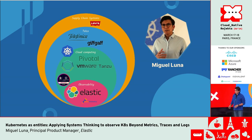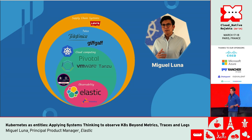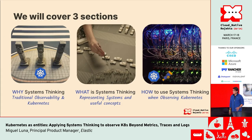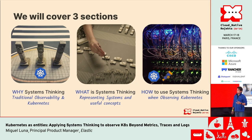A little bit about myself. I'm Colombian, I've been living in London for 20 years. I'm an industrial engineer, I also studied computer science and worked in supply chain systems management for a while — this is where I bumped into systems thinking. Then I moved to the telco world and bumped into Kubernetes. Eventually moved to cloud computing and then to observability. Today we're going to cover three sections: why systems thinking and the challenges of using only traditional observability when observing Kubernetes; the core concepts of systems thinking and a way of representing systems; and finally, how to use systems thinking to observe Kubernetes, with a feature appearance by OpenTelemetry.